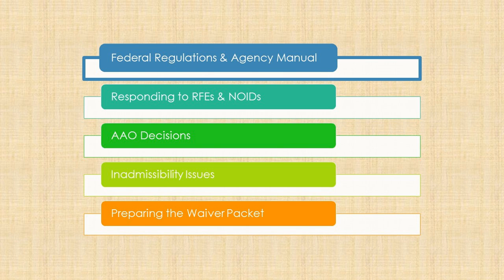Here's a brief overview of what we will be covering. I'm going to start with the regulations and agency guidance that apply to RFEs and NOIDs. After that, I'll discuss how to respond to common RFEs and NOIDs. Finally, I'll review some AAO decisions that might inform how you frame your responses or avoid them altogether, and then I'll turn it over to Brandon.